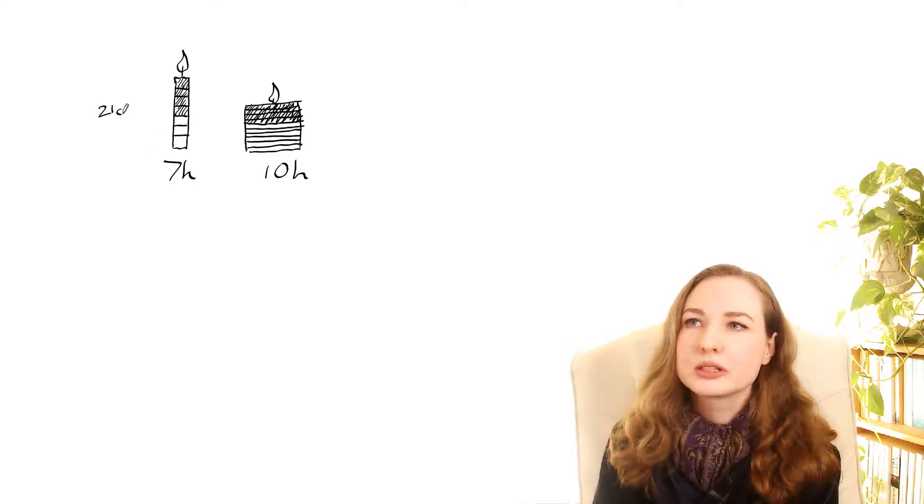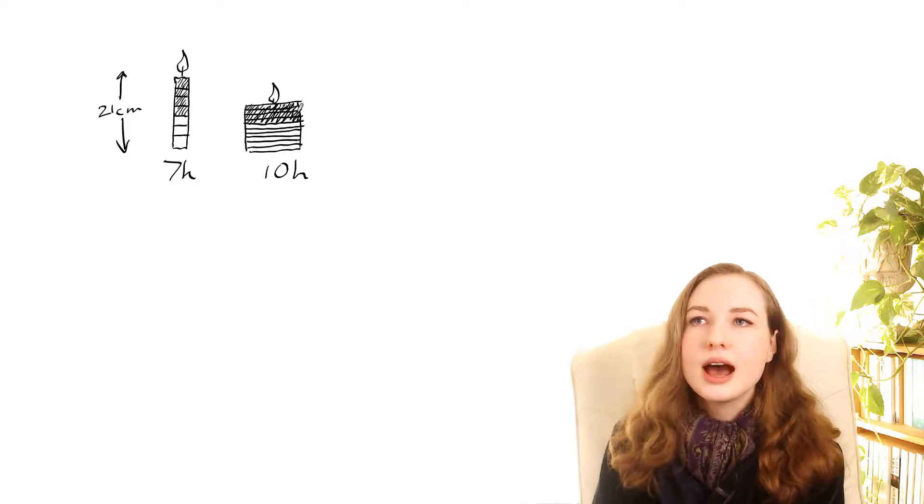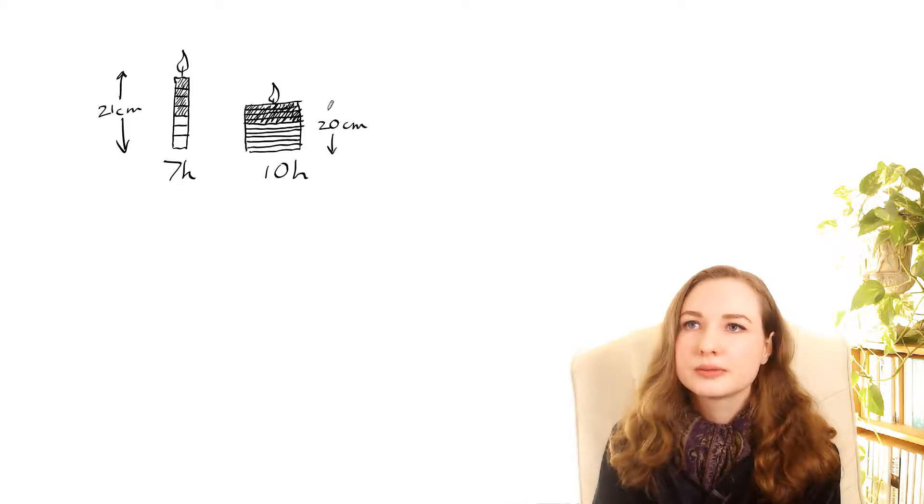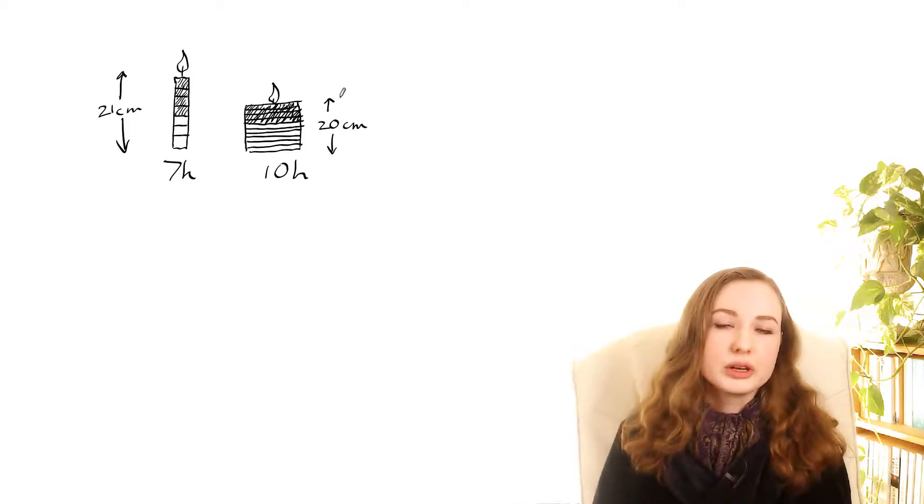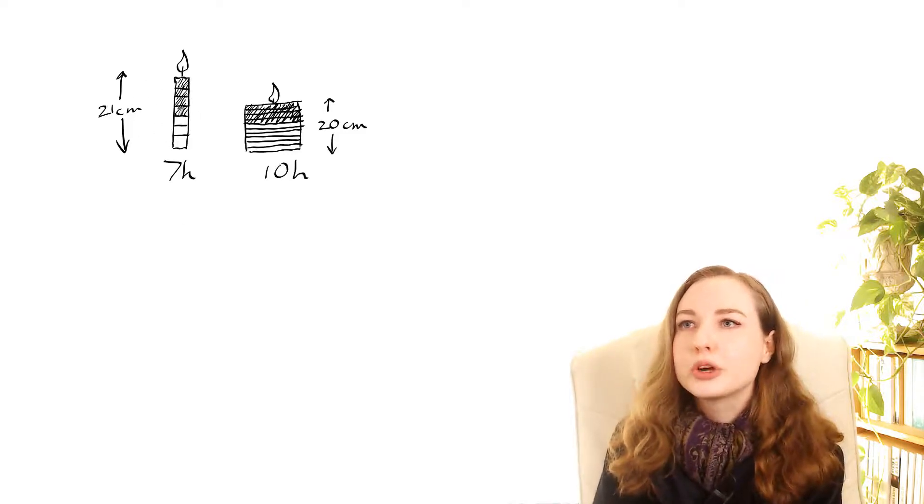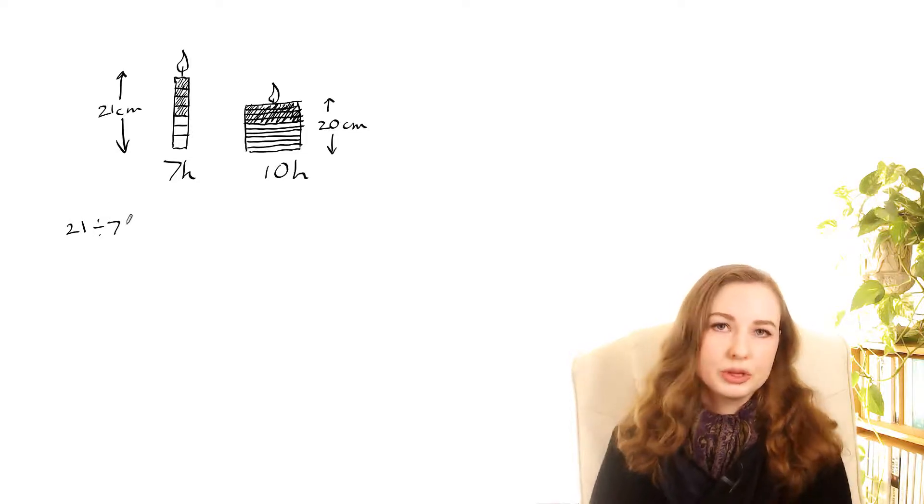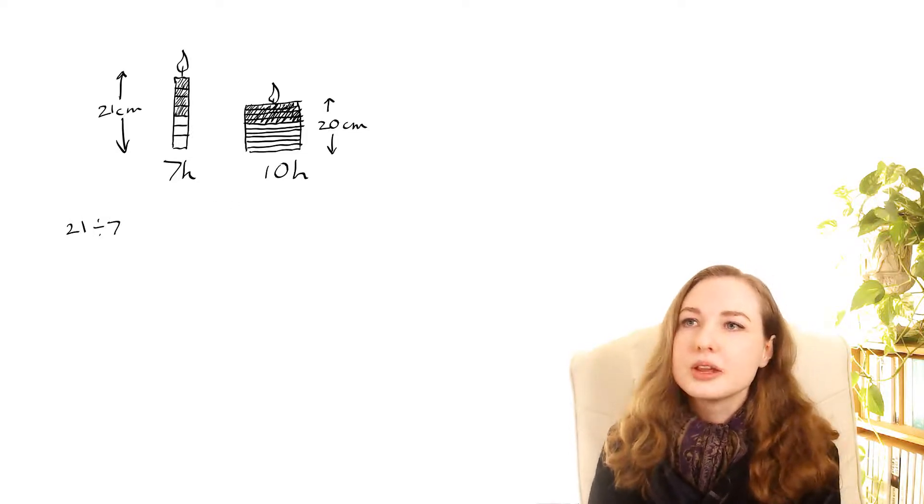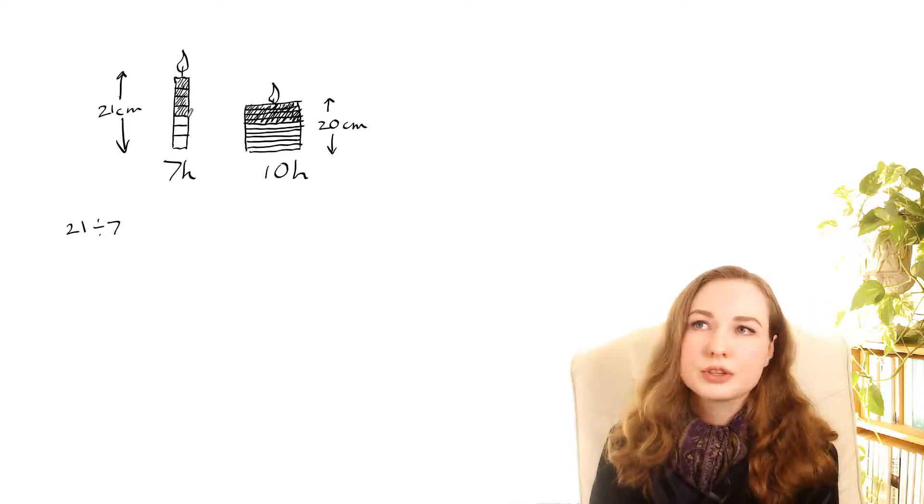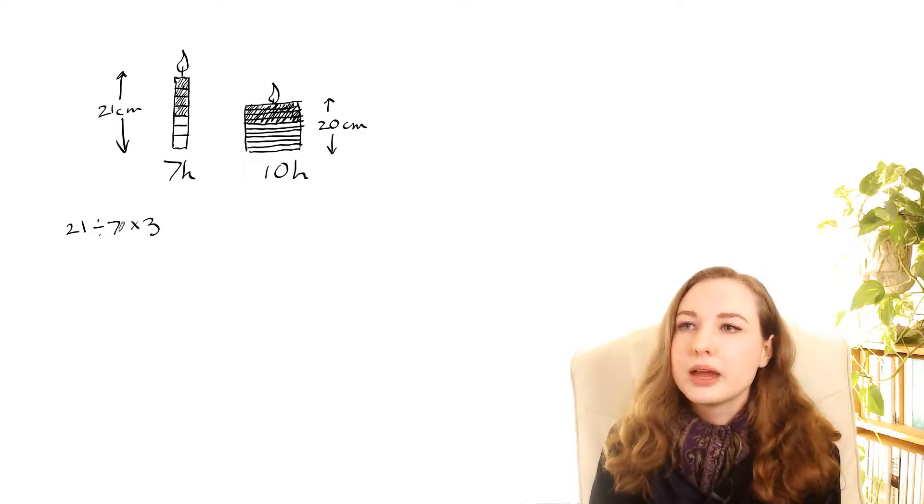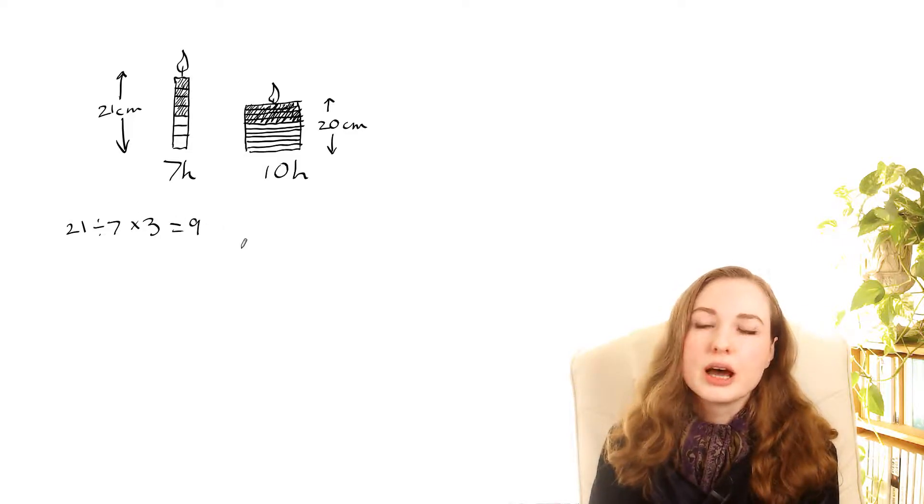So let's say that this is 21 centimeters high. So that height is 21 and for this one we want it to be able to be cut into 10 pieces so let's say it's 20 centimeters high. And then let's try to work out what the heights would be after four hours. So what we could do is we could work out the height of each little piece. So if there's seven pieces and they make 21 centimeters all together then to work out the height of one piece we could do 21 divided by 7. So that would be 3. Each one is 3 centimeters high. And then you can see that after four hours there's three of them left. So we've got 3 times whatever that height was. So that would make 3 times 3 which is 9. It would end up being 9 centimeters high at the end.